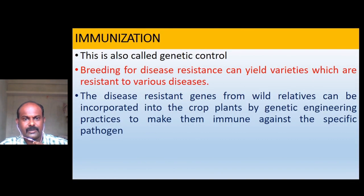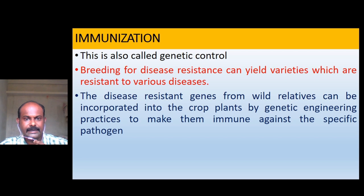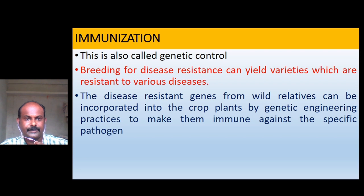Immunization, also called genetic control, involves breeding for disease resistance to develop varieties resistant to various diseases. Disease resistance genes from wild relatives can be incorporated into crop plants by genetic engineering practices to make them immune against specific pathogens.